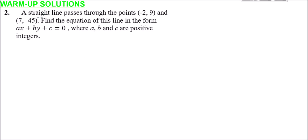Question two: a straight line passes through the points (−2, 9) and (7, −45). Find the equation of this line in the form ax + by + c = 0, where a, b, and c are positive integers — so not only integers but also positive. Since we know two points, it's natural to calculate the gradient first.